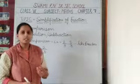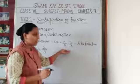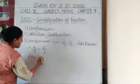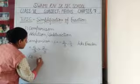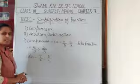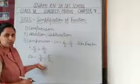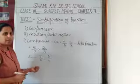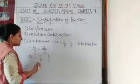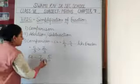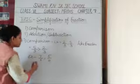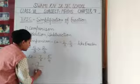Now we are moving to another type of example in which the denominators are different. I am taking a second example: 7 upon 6 and 5 upon 4. In this type of situation, first we convert into the same denominator. To make the same denominator, first we do cross multiplication.